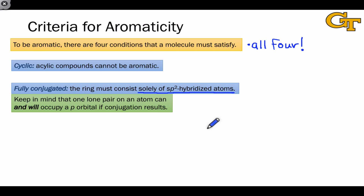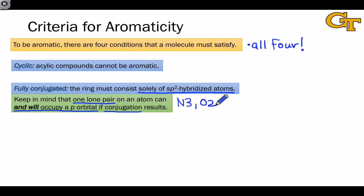Keep in mind that if an atom bears a lone pair, the lone pair can be placed in a p orbital, and it will be placed in a p orbital if conjugation results from that placement. In other words, if placement in a p orbital enables the delocalization of a lone pair into adjacent p orbitals, then that atom will hybridize itself such that the lone pair ends up in a p orbital. Good structures to refer back to are the N3 and O2 atoms from the previous lesson, where we saw lone pairs occupying p orbitals on those atoms.